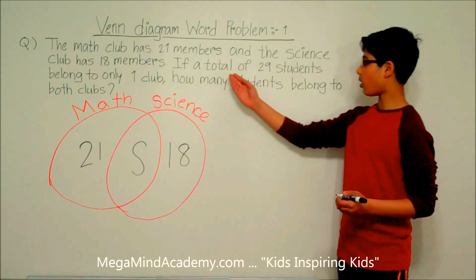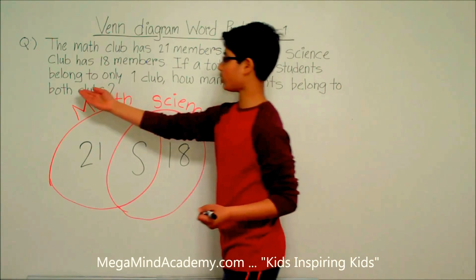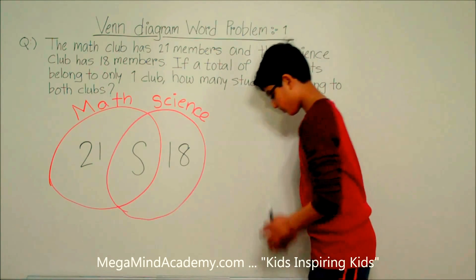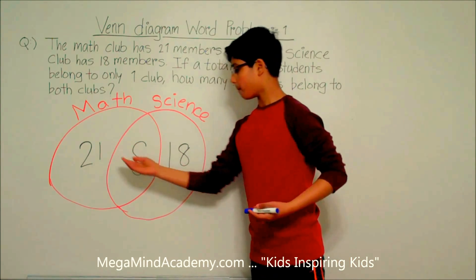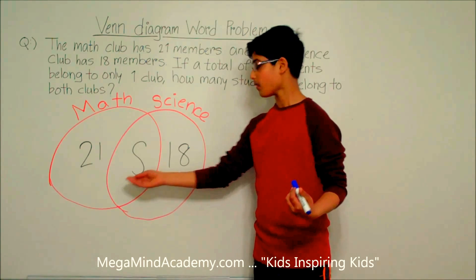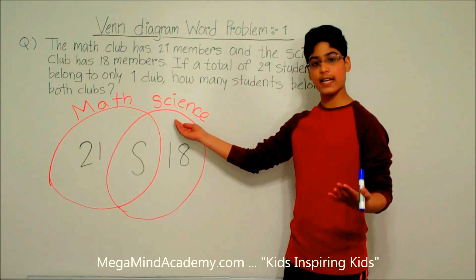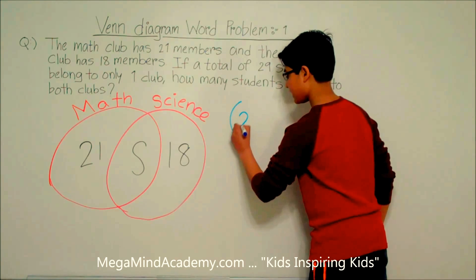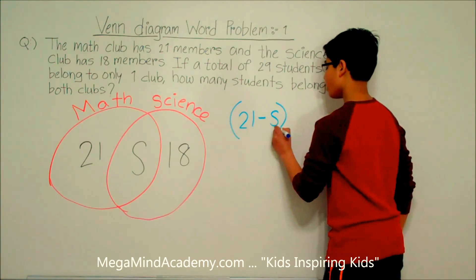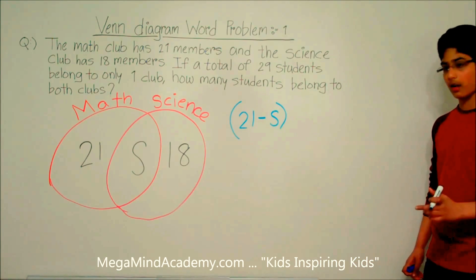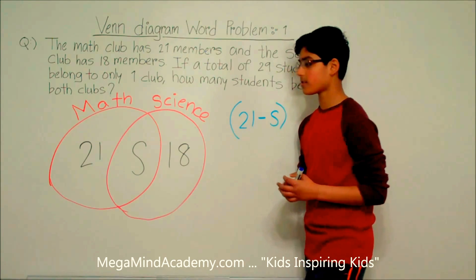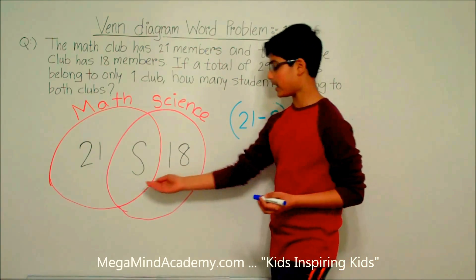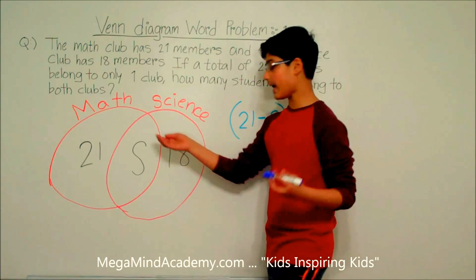So there are S students who belong to both clubs. We know there are a total of 29 students who belong to only one club. The number of students who only belong to the math club is 21 minus S, and the number of students who belong to only the science club is 18 minus S.